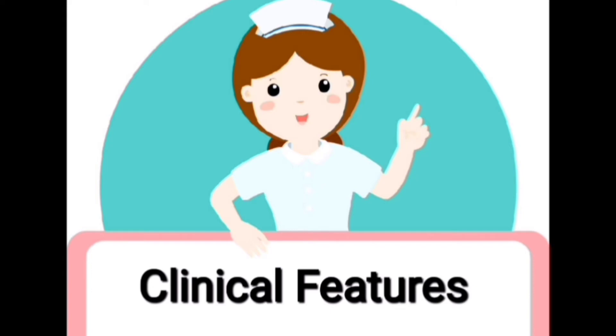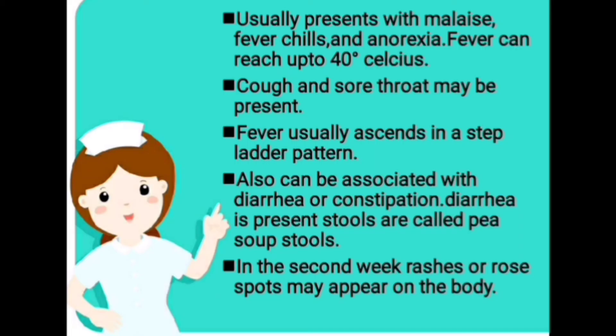Clinical Features. Usually presents with malaise, fever, chills, and anorexia. Fever can reach up to 40 degrees Celsius. Cough and sore throat may also be present. Fever usually ascends in a step-ladder pattern. Can also be associated with diarrhea or constipation. Diarrhea stools are called pea-soup stools. In the second week, rashes or rose spots may appear on the skin.